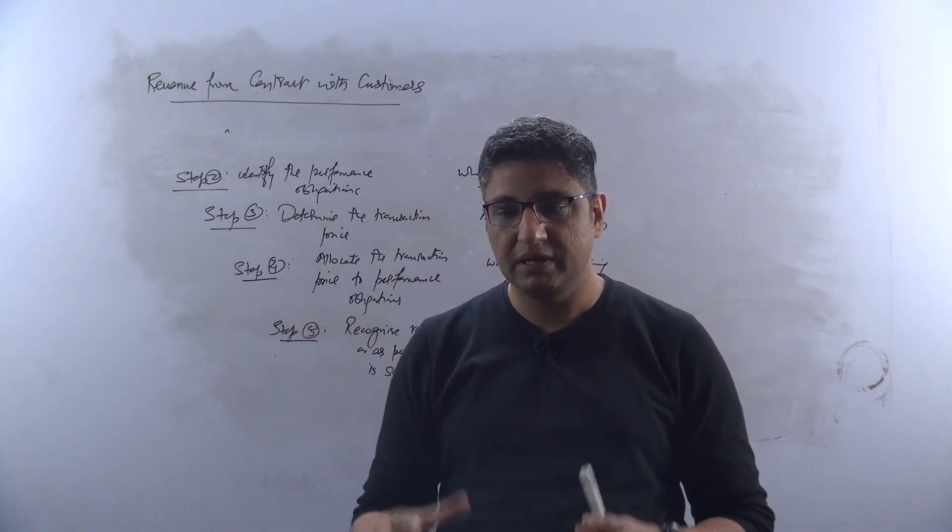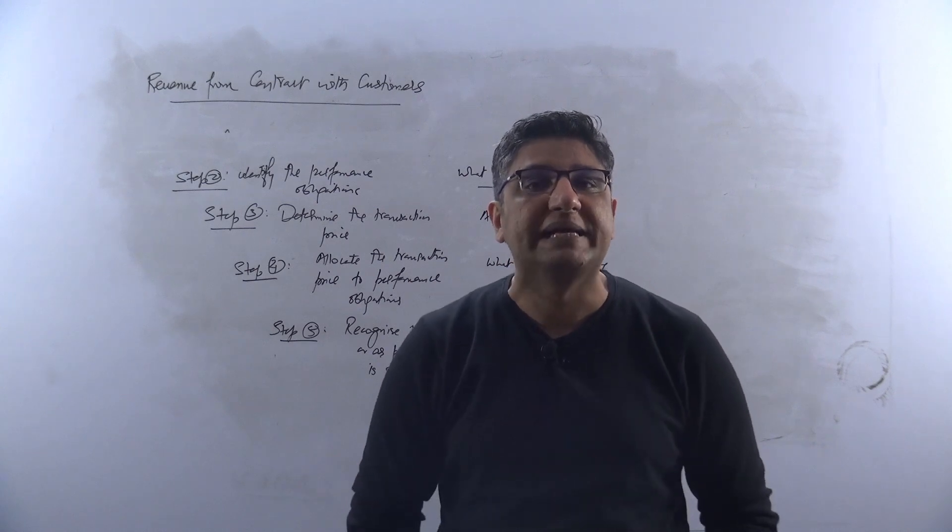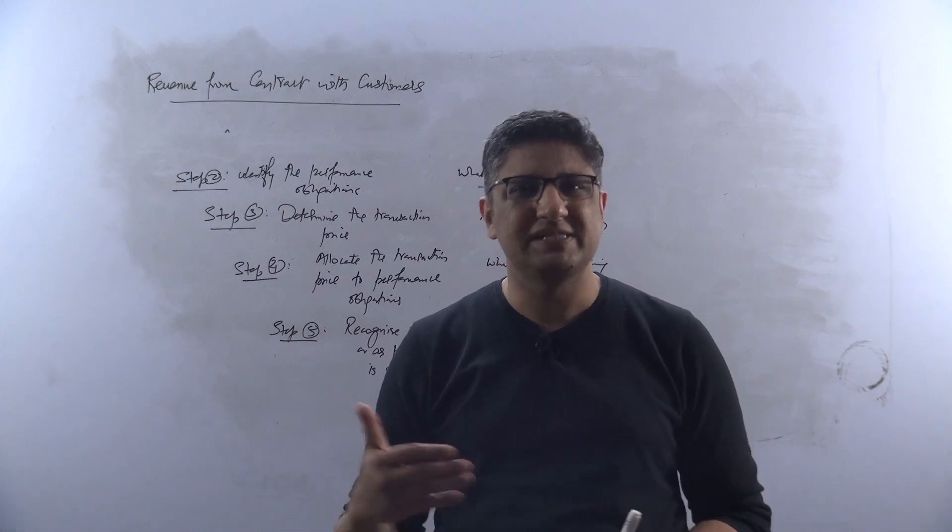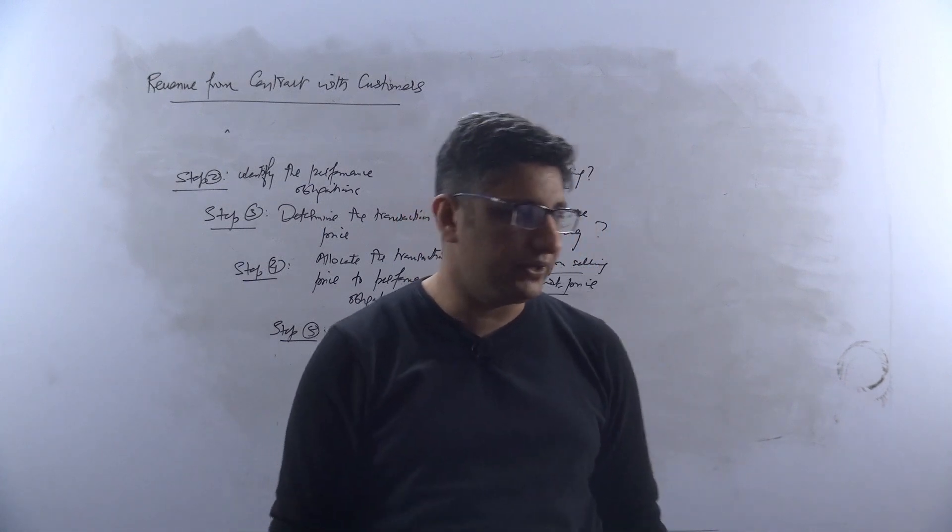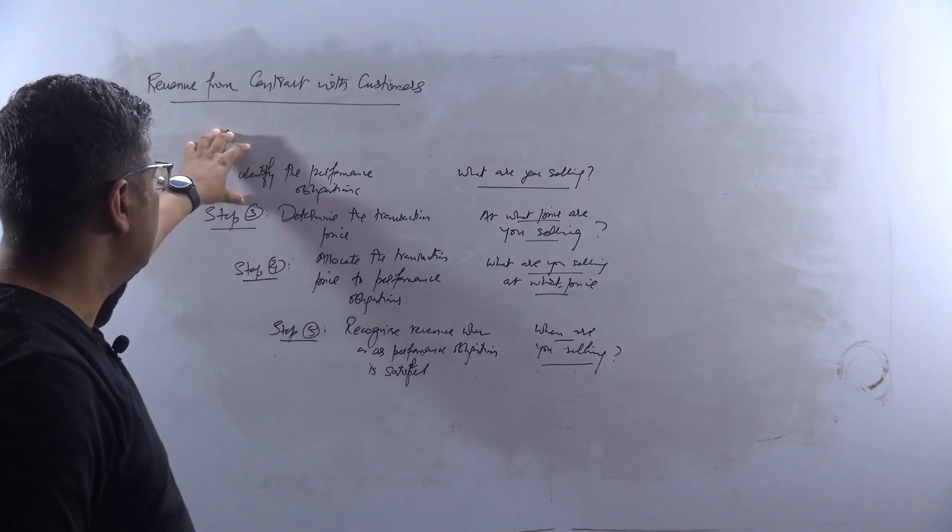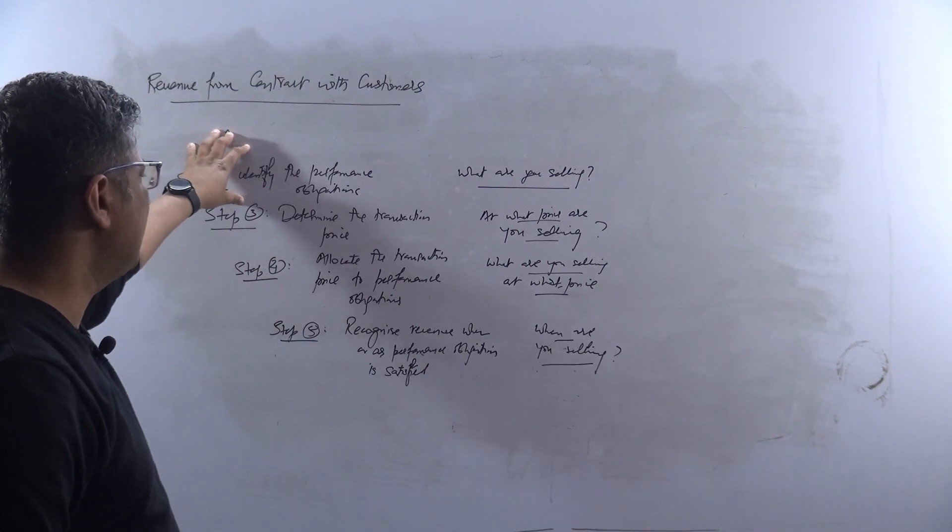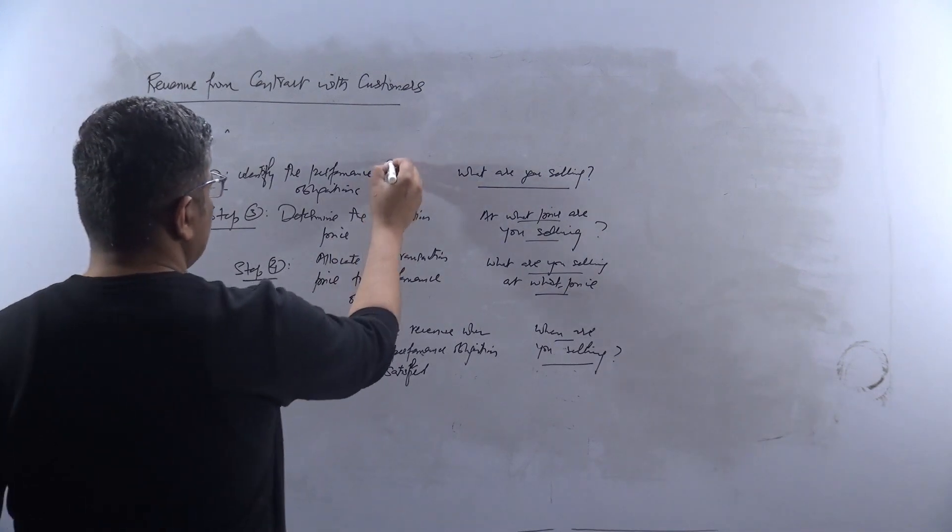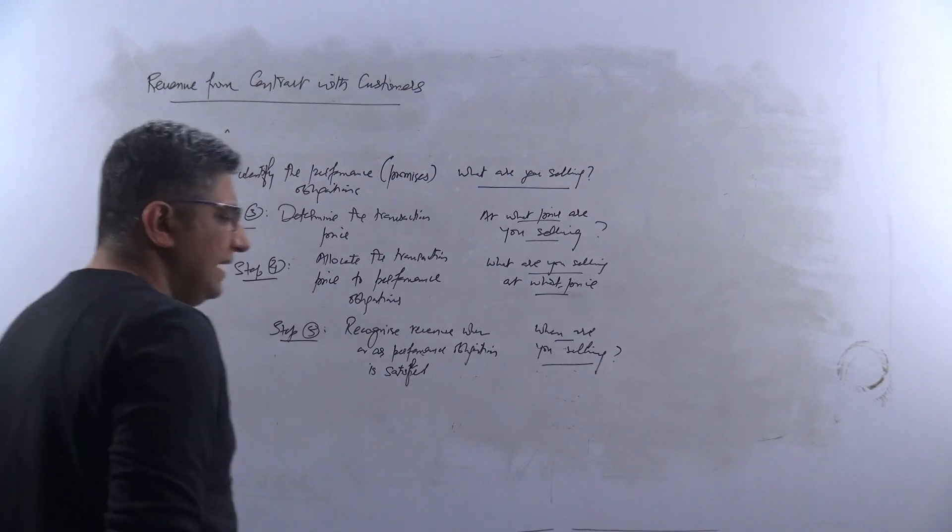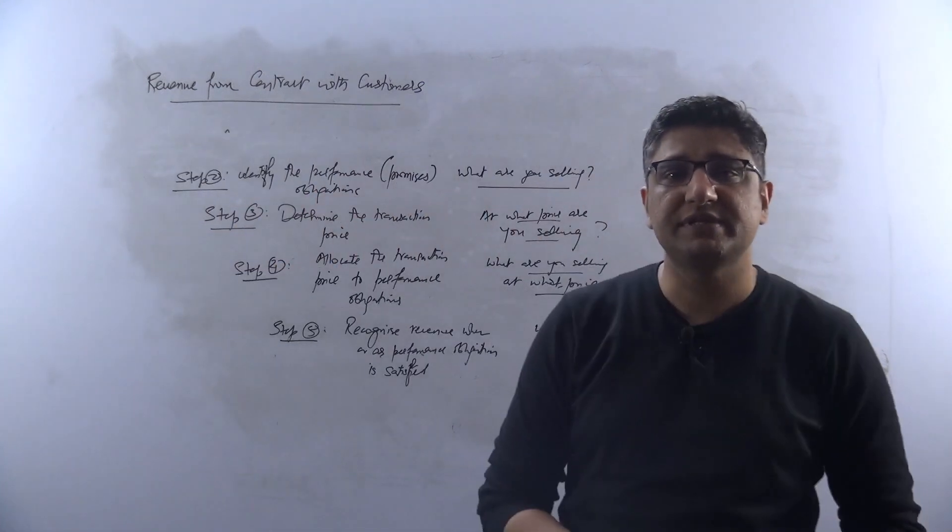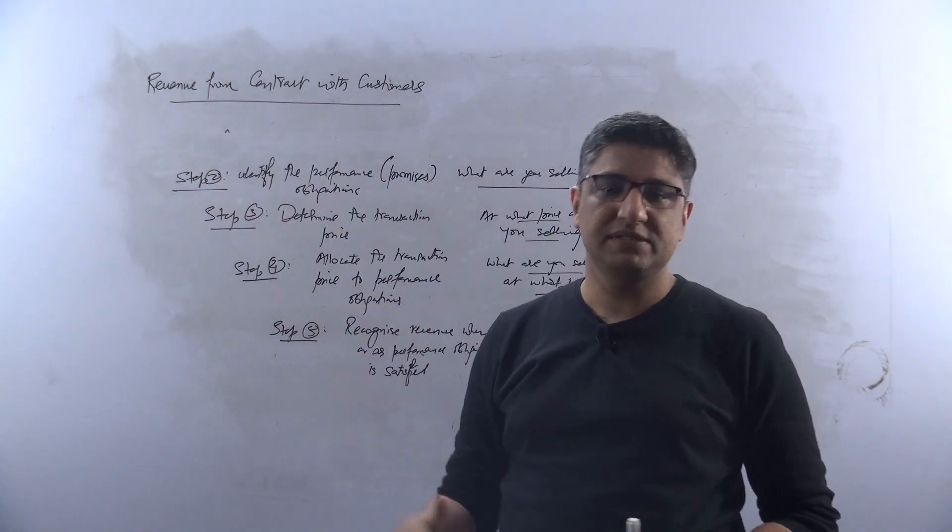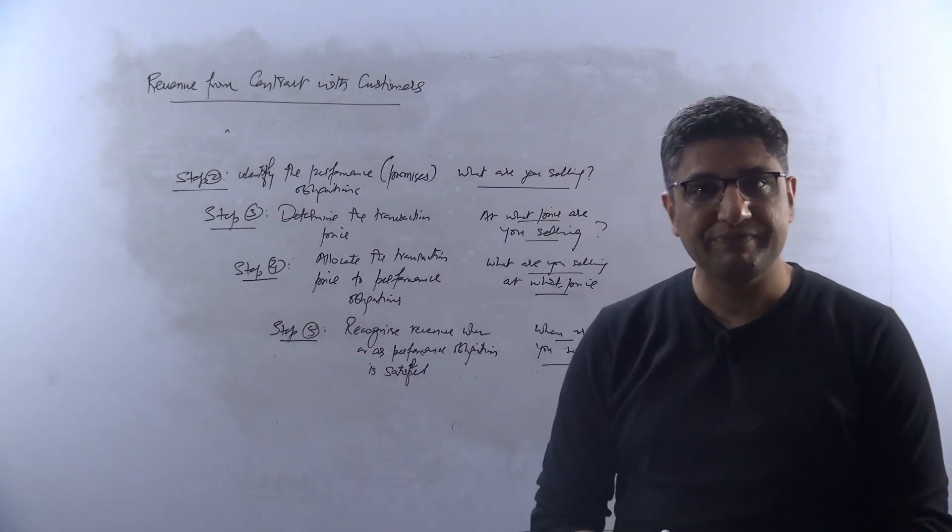We're saying that there could be multiple promises involved. There could be multiple performance obligations to be met by the seller. This standard is purely about the seller's accounting, of course. So that is where the second step comes in: identify the performance obligations. I would use the word promises. The first step was: are you selling? The second step is: what is it that you're selling?